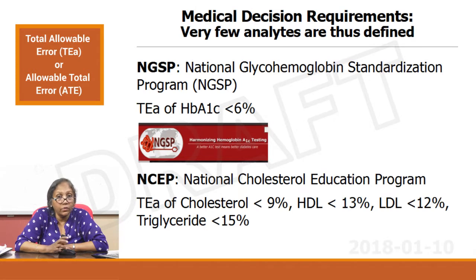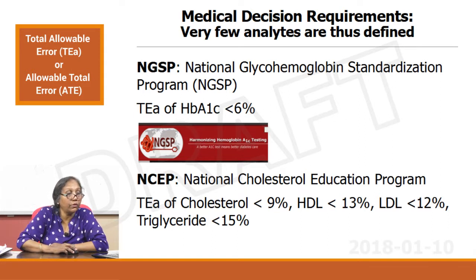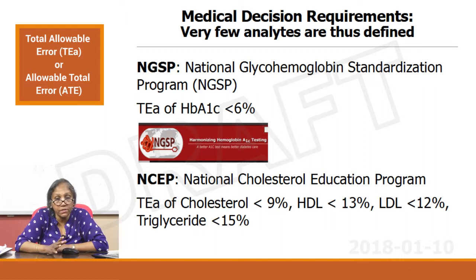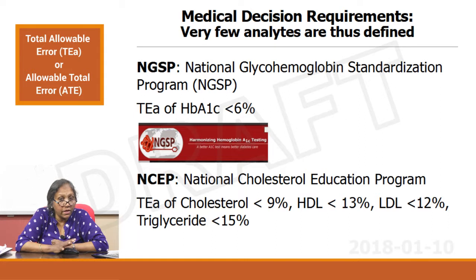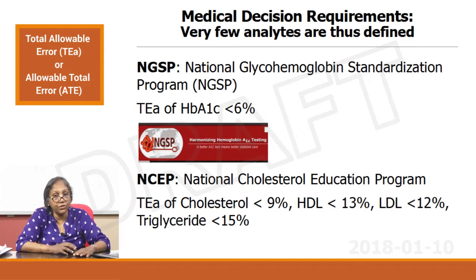There are only very few analytes for which medical decision levels have defined TEas, by certain bodies like NGSP — the National Glycohemoglobin Standardization Program. It specifies the TEa for HbA1c should be less than 6 percent, meaning you add up your systematic error and your random error and everything together should stay below 6 percent. Again, NCEP — the National Cholesterol Education Program — has defined TEa for lipids: cholesterol less than 9 percent, HDL less than 13 percent, LDL 12 percent, triglyceride 15 percent.